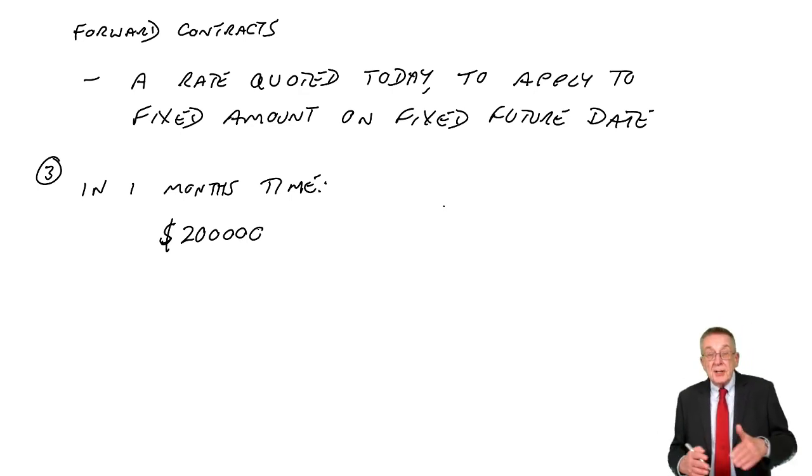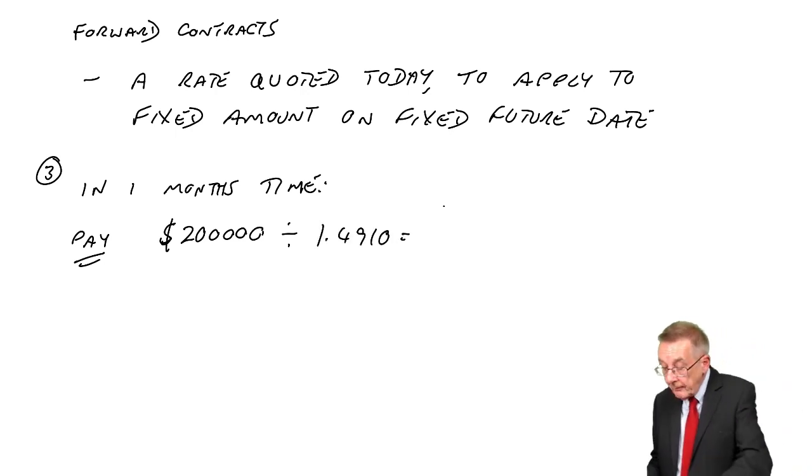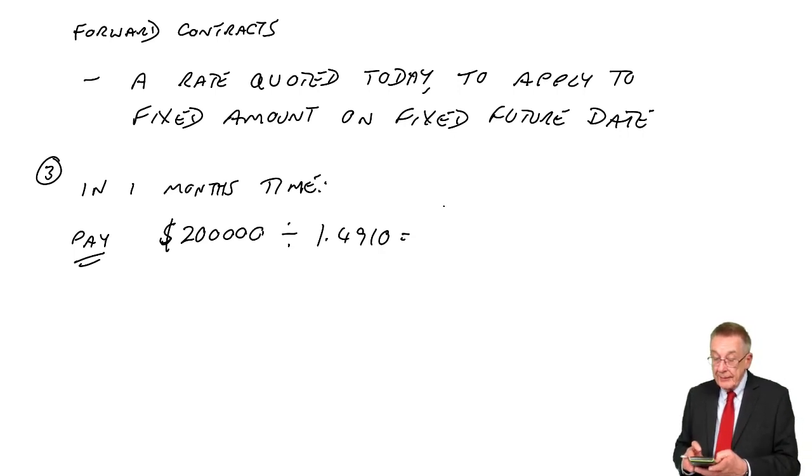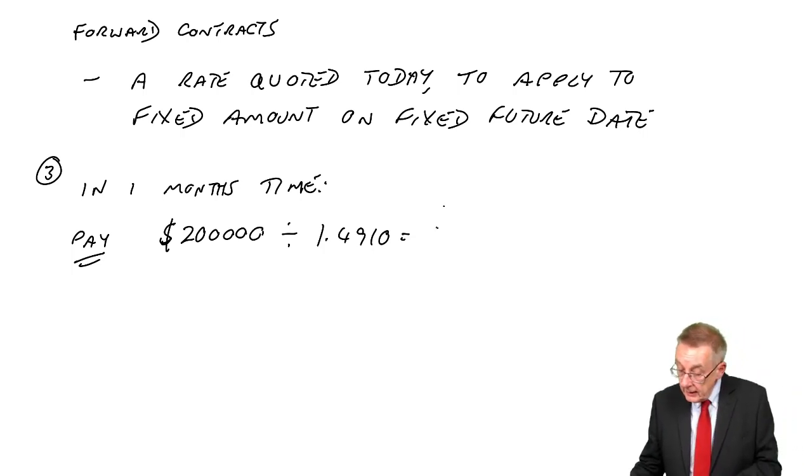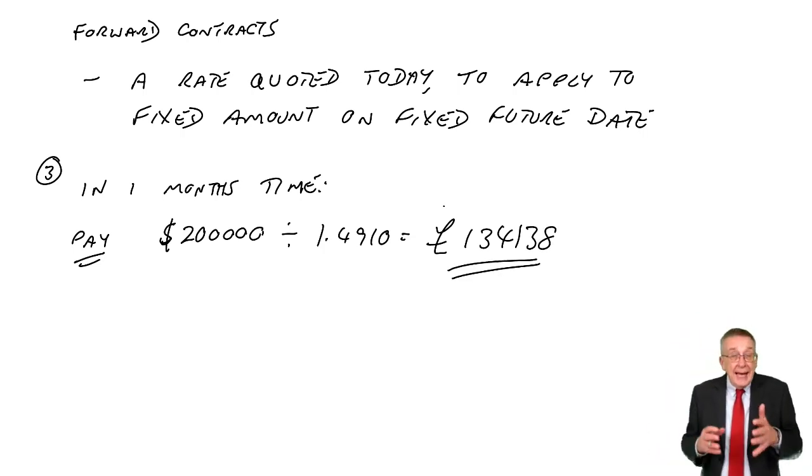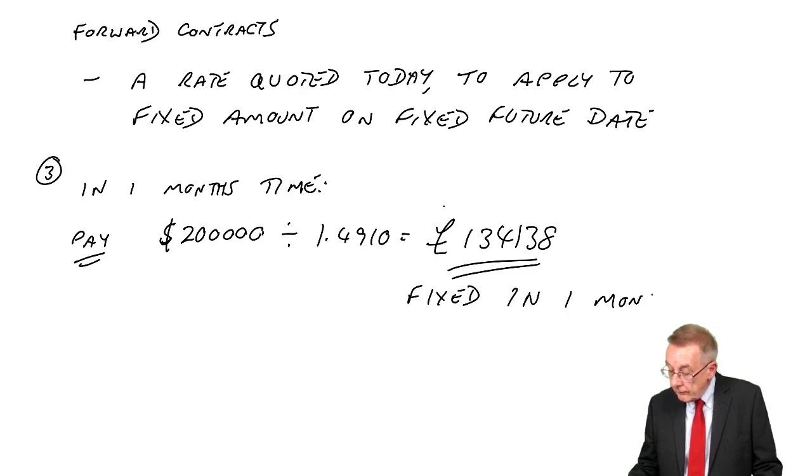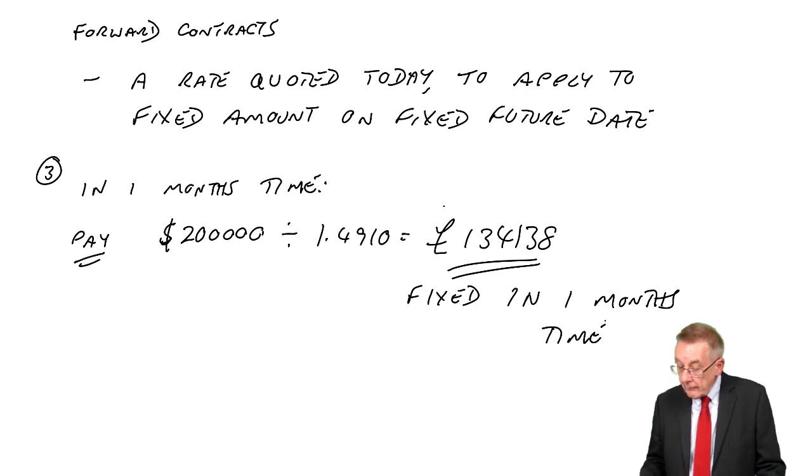It's quoted dollars to the pound, so we'll divide by the relevant rate. And since we're paying dollars, we'll need to buy dollars. We'll convert at the lower rate, 1.4910. And so 200,000 divided by 1.4910 is 134,138. And whatever happens to the actual exchange rate is completely irrelevant. This is fixed in one month's time.